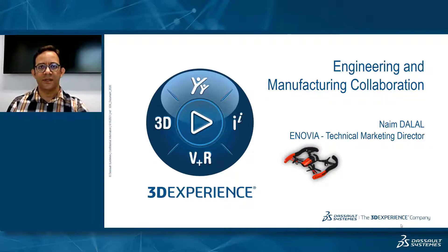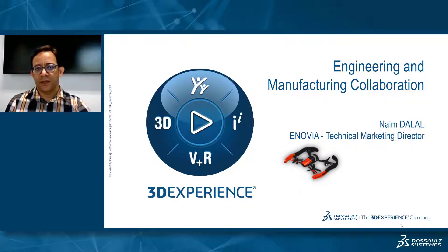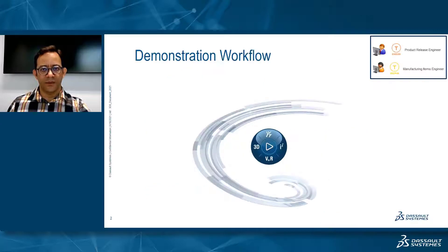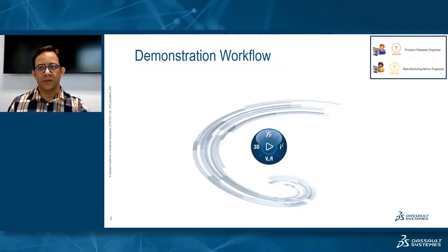In this scenario, we are going to see how engineering and manufacturing can collaborate around the product definition — the engineering bill of material as well as the manufacturing bill of material. We have two roles: the product release engineer, which is an Inovia role, and the manufacturing items engineer, which is a Delmia role.